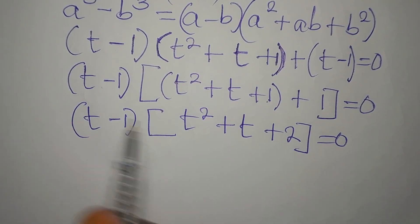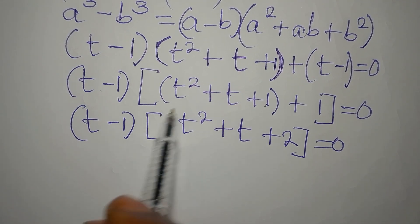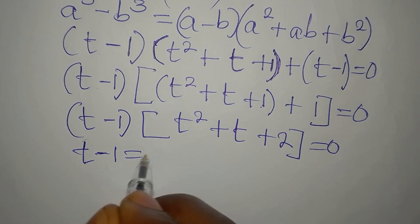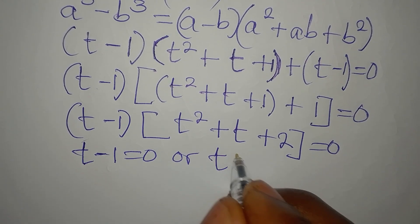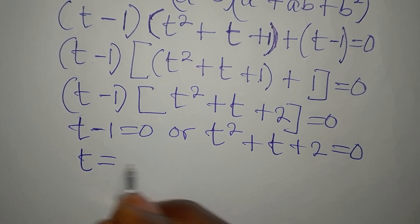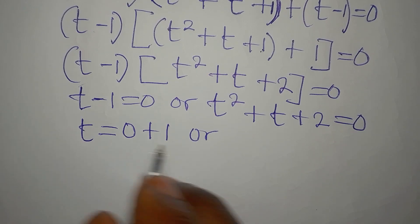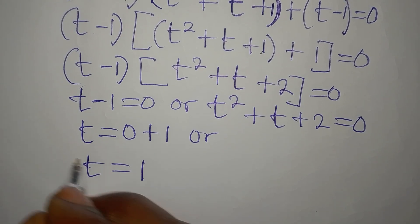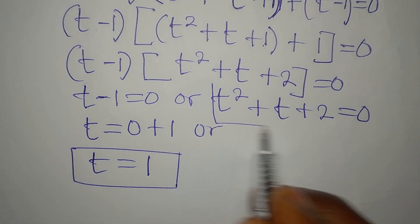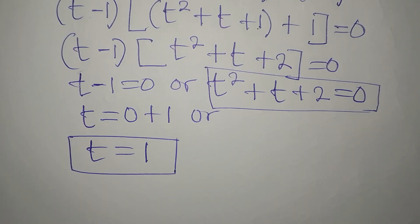We are multiplying these to get 0, so when one factor is 0, everything multiplied by 0 is still 0. So either t minus 1 equals 0, or t squared plus t plus 2 equals 0. From t minus 1 equals 0, our t equals 1. This is one of the solutions.